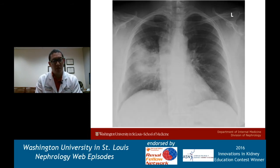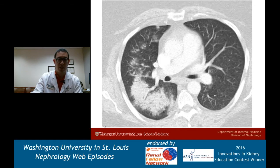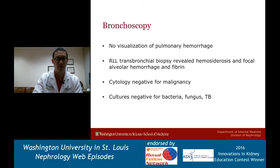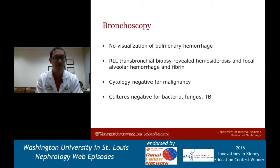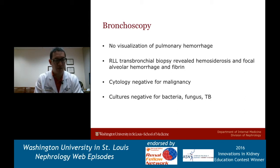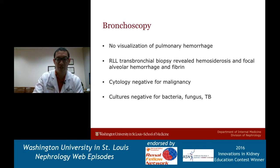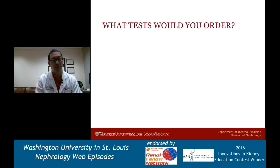Initial x-ray showing a right middle lobe consolidation. She has a CT scan - a representative slice showing similar findings. She undergoes bronchoscopy. There is no visualization of pulmonary hemorrhage. Right lower lobe transbronchial biopsy was performed; it revealed hemosiderosis and focal alveolar hemorrhage and fibrin. Cytology was negative for malignancy, and cultures are negative for bacteria, fungus, and TB. Here's a good opportunity for viewers to think: if you were a nephrologist getting involved as a consultation, what would you want to order next?